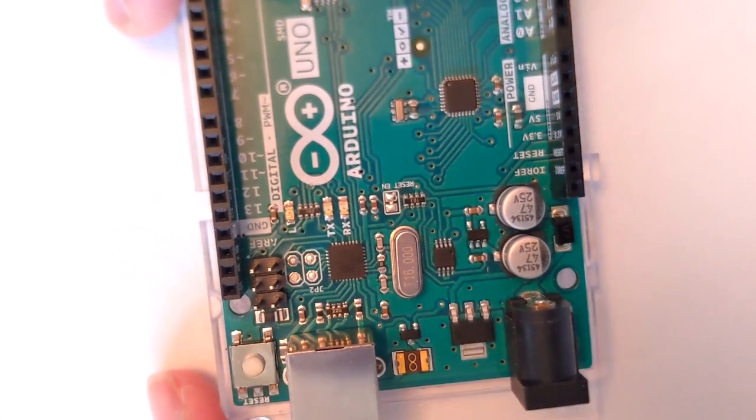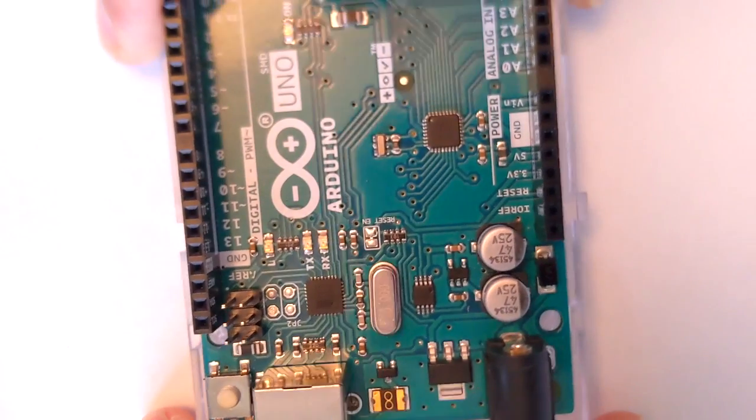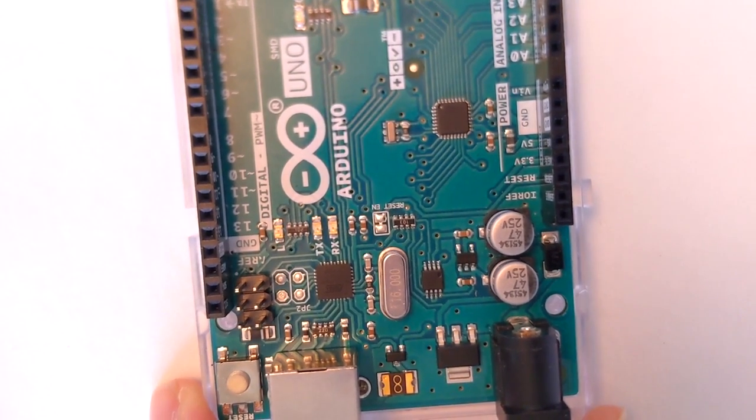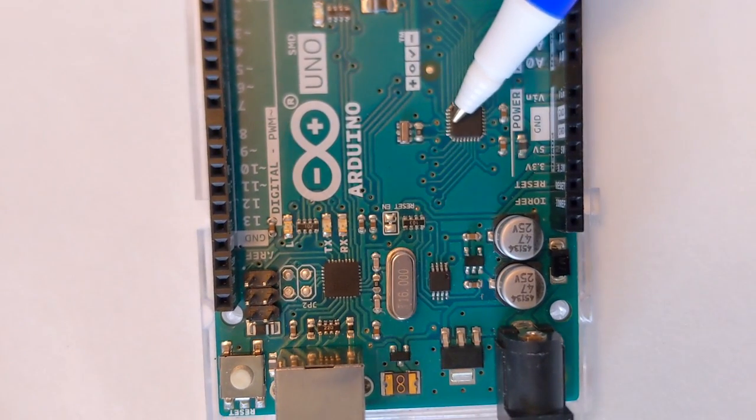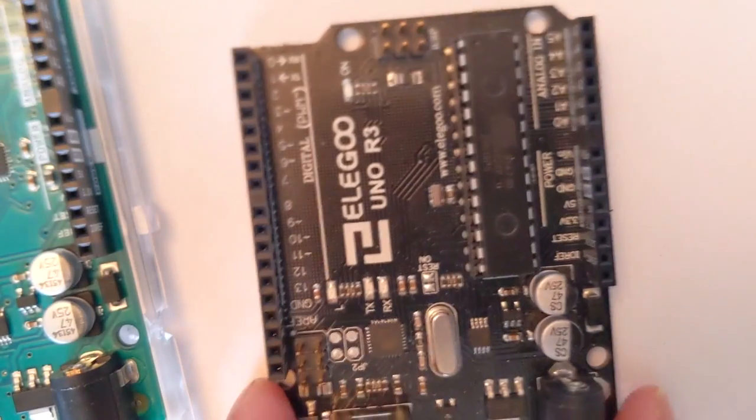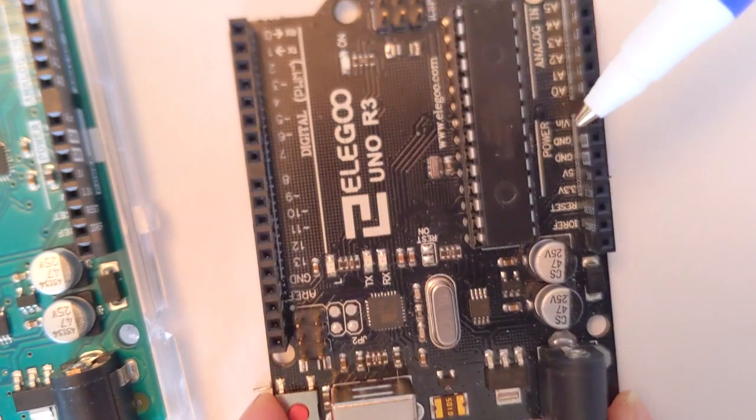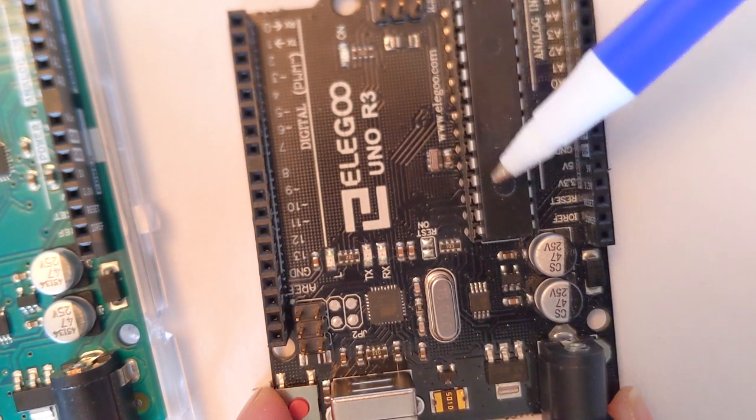First of all, our board has a brain in it. So that's what the microcontroller is. You'll see it here on this Arduino Uno. And for this Elegoo Uno R3 board, you'll see it, it's a little bit larger.